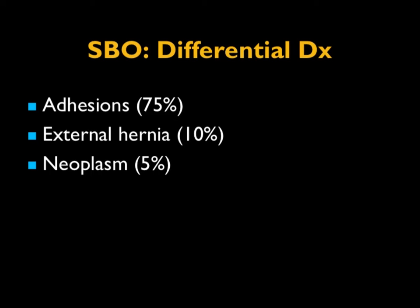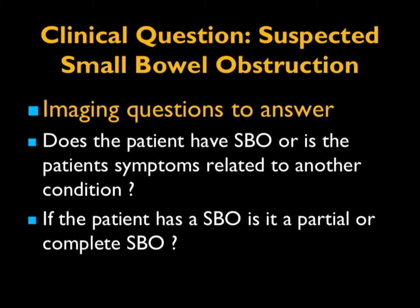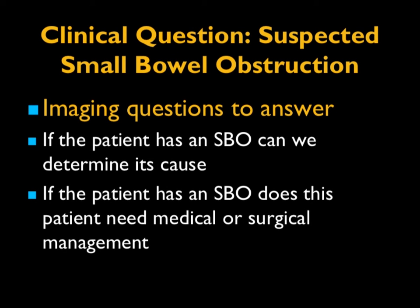Laparoscopic surgery with multiple trocars actually becomes a good source of adhesions in the future. With small bowel obstruction, the question is: why — what's the cause? But we also ask: does the patient really have bowel obstruction? If they have abdominal pain, it could be obstruction, pancreatitis, stone disease, or almost anything. Is the obstruction partial or complete? Can we determine its cause? And from a triage perspective — is this patient going home, being admitted, or going to surgery? CT is very strong at answering these questions.